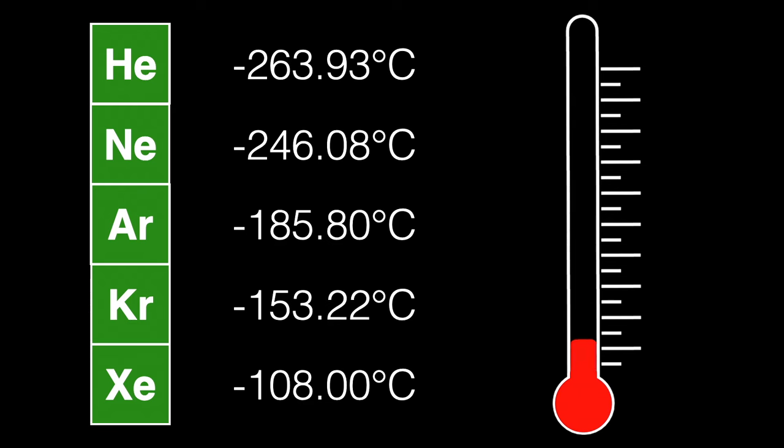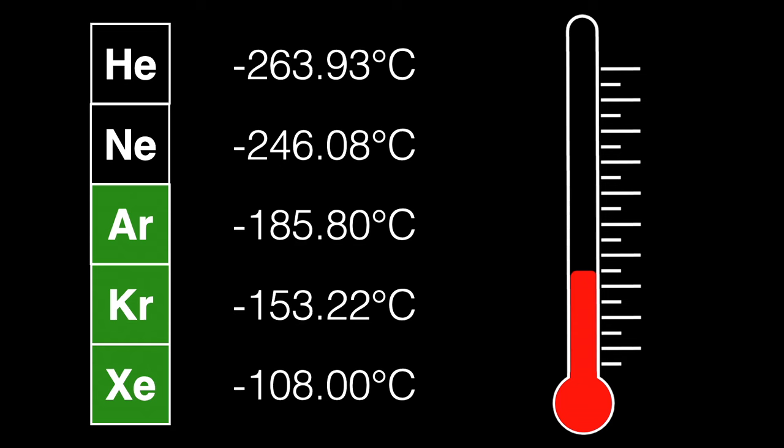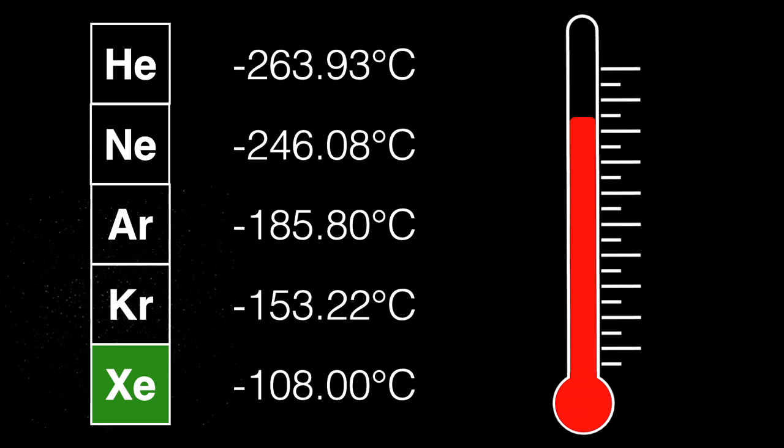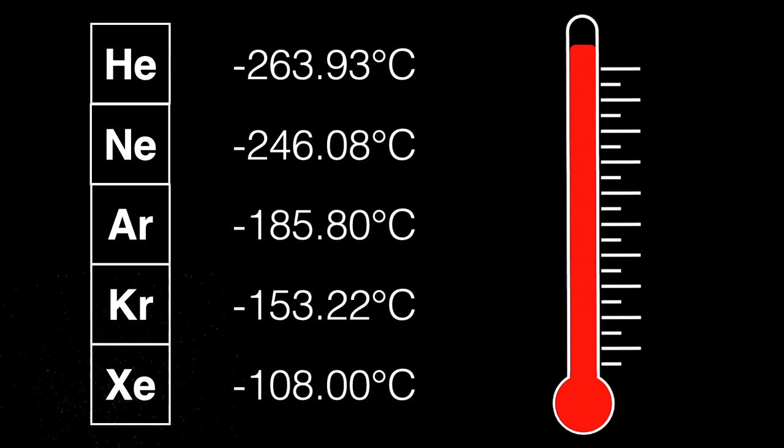The extremely chilled liquid air is allowed to warm up. As the liquid warms, each element changes from a liquid back to a gas at a different temperature. The first to boil away at minus 264 degrees centigrade is helium. You pipe the helium gas away and save it. Continued warming boils away neon at minus 246C. You save that off too. Continue on to argon, then krypton, and the portion remaining that changes back to a gas at minus 108C is xenon.